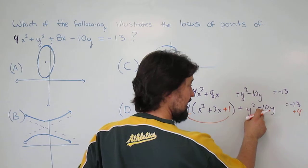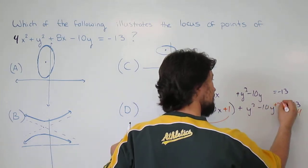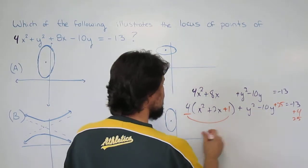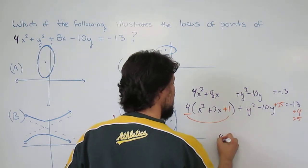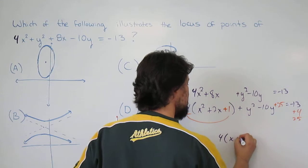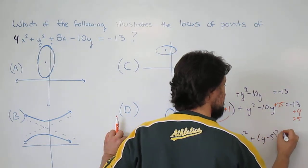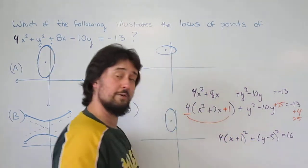Now take the negative 10, divided by 2, negative 5, squared is 25. Now what we have here is 4 quantity x plus 1 squared plus y minus 5 squared equals 16.